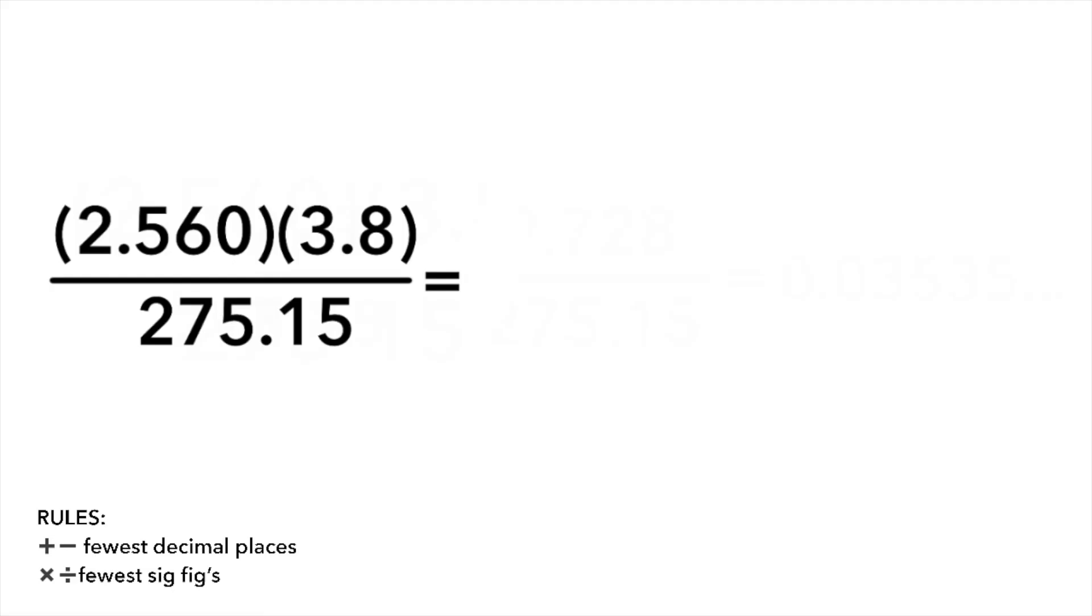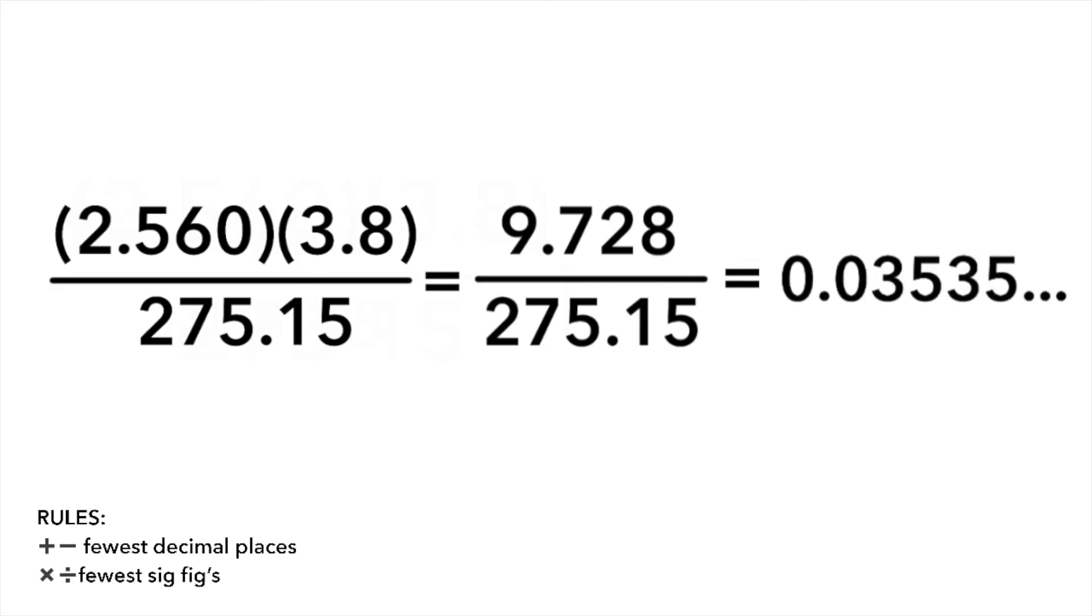2.560 times 3.8 all divided by 275.15. Here we have both multiplication and division. To get our final answer, first we multiply the terms on the top to get 9.728. Then we divide by the 275.15 to get an unrounded answer of 0.03535.